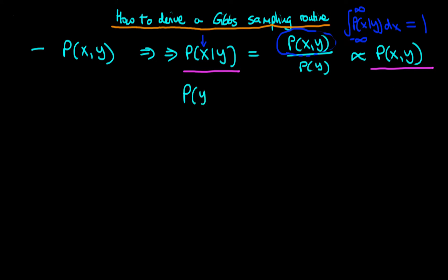We then do the same thing for y. We find the conditional distribution of y given x as being proportional to p of x and y, but then we remove everything on the right hand side which doesn't involve y, and look at the functional dependence to see if we recognize that distribution. If it looks like a normal, for instance, then it must be a normal because it is a valid probability distribution. This gives us conditional distributions which we may or may not be able to sample from, but it is a first step in deriving a Gibbs sampling routine.